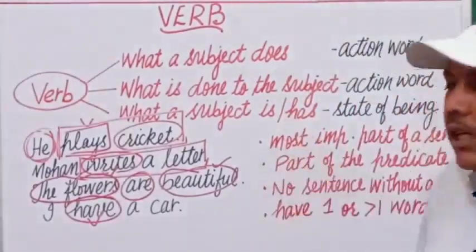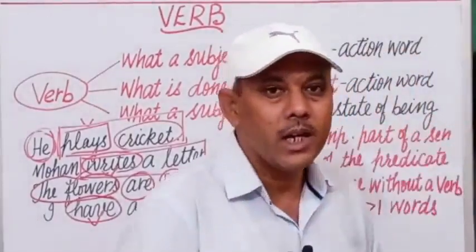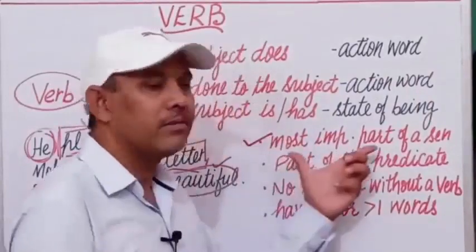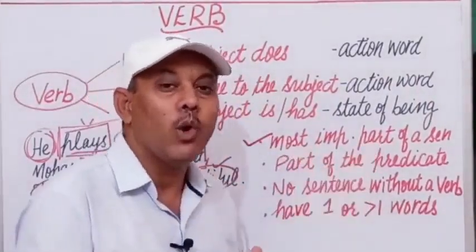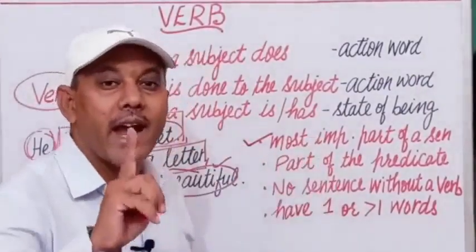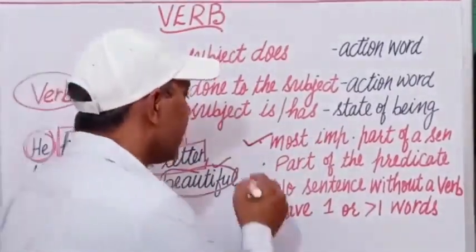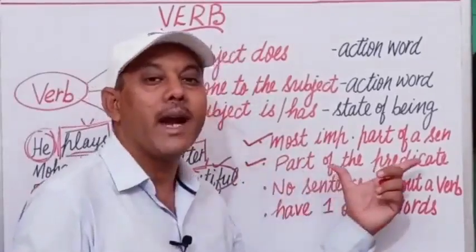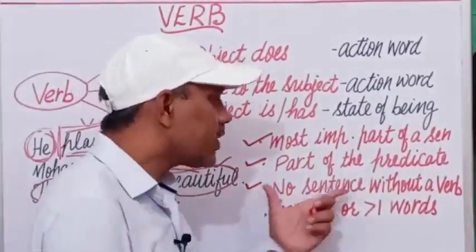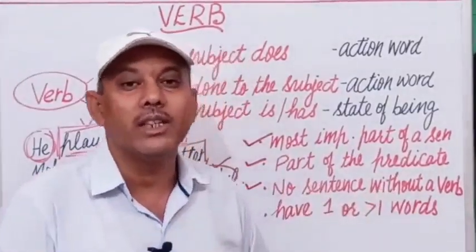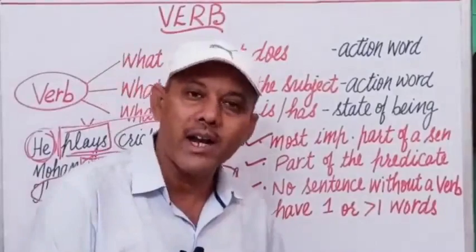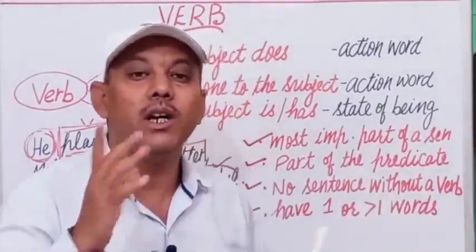Let us know some features of a verb. First, a verb is the most important part of speech and the most important part of a sentence — without a verb, we can never frame a sentence. Second, it is the part of the predicate in a sentence. Third, no sentence can be framed without a verb.